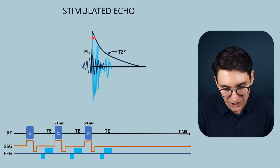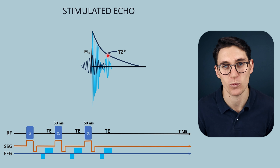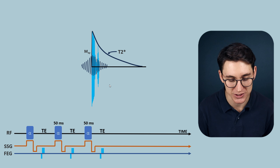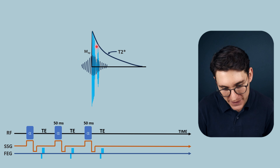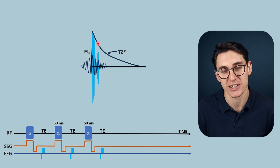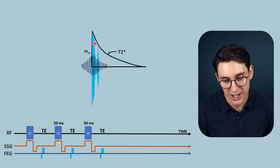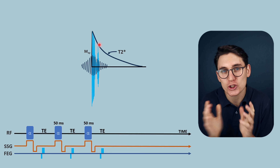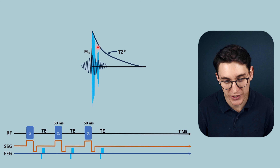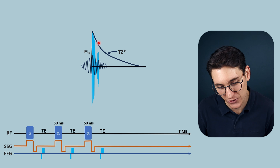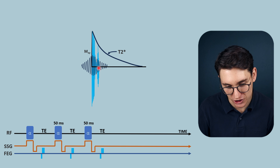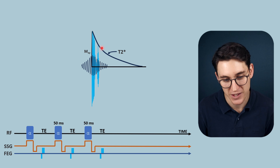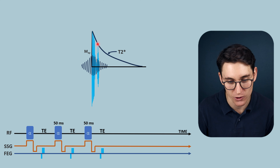The free induction decay curve gives us signal that is essentially T1-weighted. Because our TEs are very short - under 50 milliseconds - the TE occurs very early in the free induction decay curve. There hasn't been time for differences in free induction decay between tissues to develop, so there is little T2 weighting here. Short TEs give us proton density and T1 weighting. This sequence therefore gives a combination of T2 weighting from the stimulated echo and T1 weighting from the free induction decay.